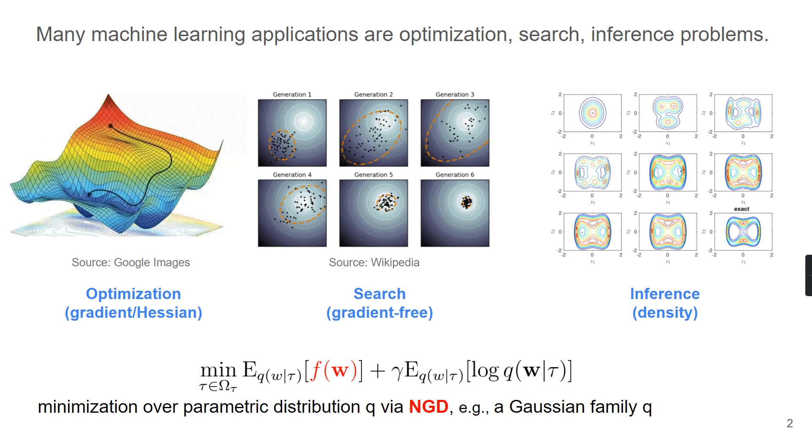Many machine learning applications are either optimization, search, or inference problems. As we can see from the figure on the left, it is about optimization problems where gradient or Hessian information is available. The figure in the middle is about black box search problems where there is no gradient information. The figure on the right is about Bayesian inference problems. In this inference problem, we care more about the whole density space instead of just one optimum point.